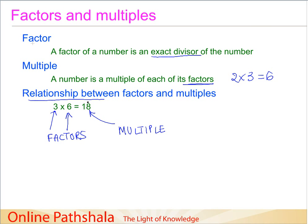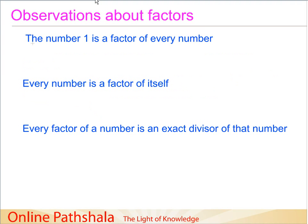Factors divide a number exactly — the remainder should be zero. Now let's look at the characteristics of factors and multiples. The first is very obvious: the number one is a factor of every number. This means I can always divide any number by one with zero remainder. For example, six equals one multiplied by six, and seven equals one multiplied by seven.